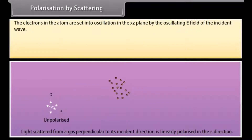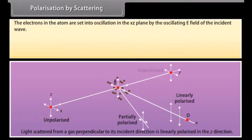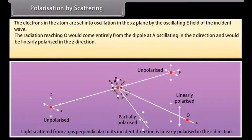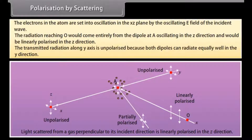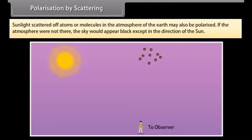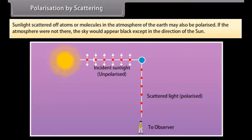Consider unpolarized light traveling along the y-axis striking a gas atom at A. The electrons in the atom are set into oscillation in the x-z plane by the oscillating electric field of the incident wave. The radiation reaching O comes entirely from the dipole oscillating in the z-direction and is linearly polarized in the z-direction. The transmitted radiation along the y-axis is unpolarized because both dipoles radiate equally in the y-direction. Sunlight scattered by atoms or molecules in the atmosphere may also be polarized; without the atmosphere, the sky would appear black except in the direction of the sun.